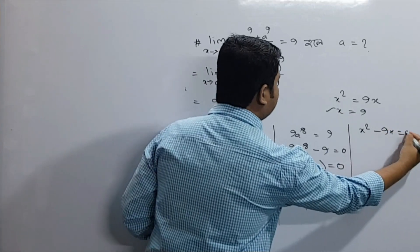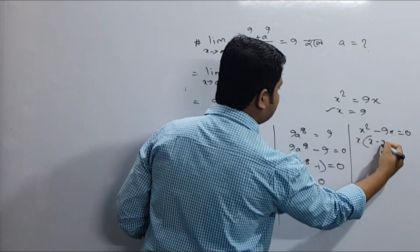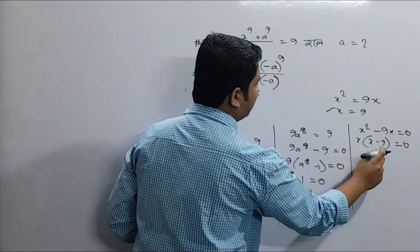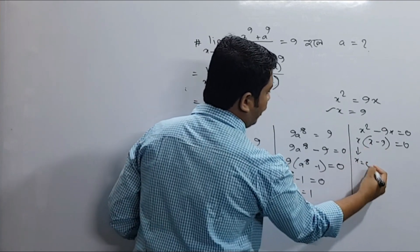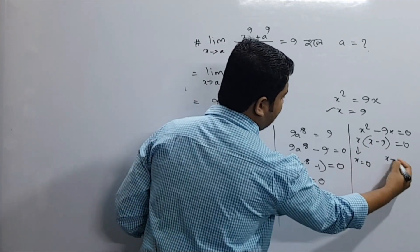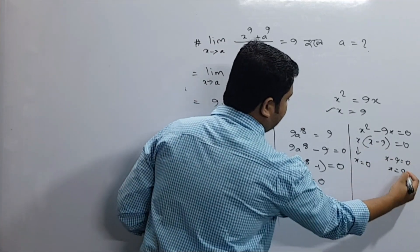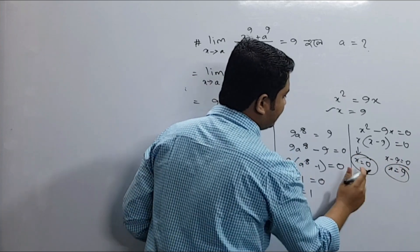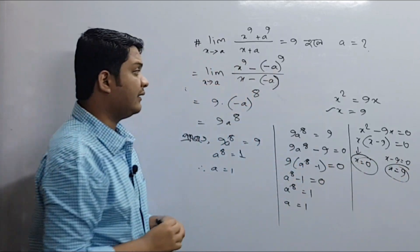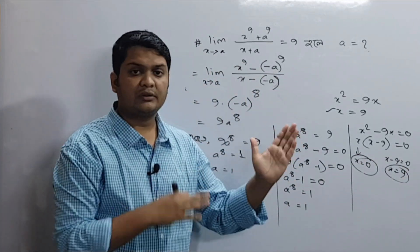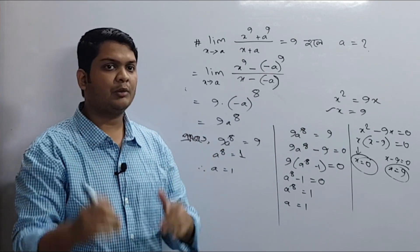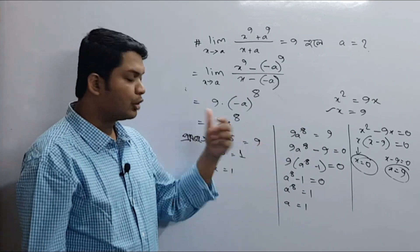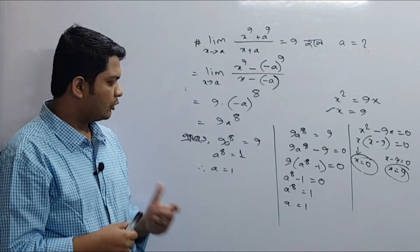So x squared minus 9x equals 0. This gives x equals 0 or x equals 0. With the variable, we are going to cancel it, so we will use this process.